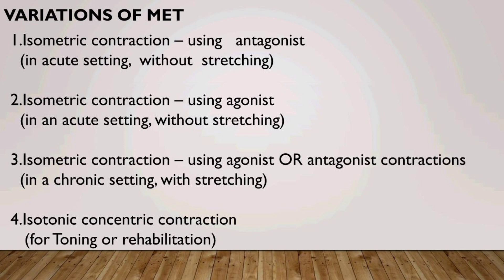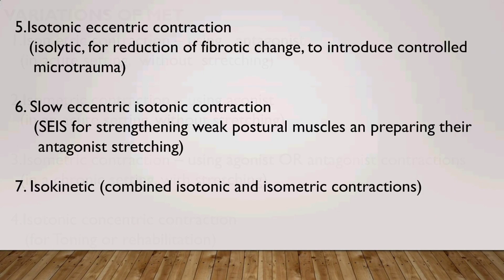Variations of MET: First, isometric contraction using antagonist in an acute setting without stretching. Second, isometric contraction using agonist in an acute setting without stretching. Third, isometric contraction using agonist or antagonist contractions in a chronic setting with stretching. Fourth, isotonic concentric contraction for toning or rehabilitation. Fifth, isolytic eccentric contraction for reduction of fibrotic change to introduce controlled microtrauma. Sixth, slow eccentric isotonic contraction (ACIS) for strengthening weak postural muscles and preparing their antagonist stretching. Seventh, isokinetic combined isotonic and isometric contractions.